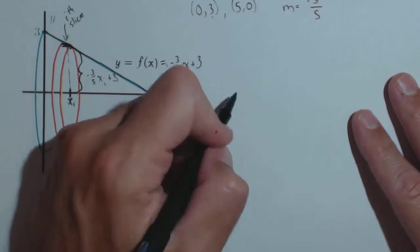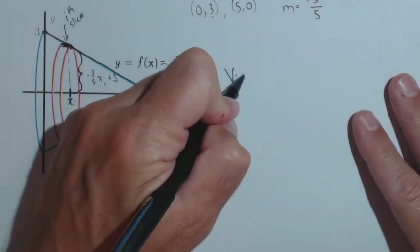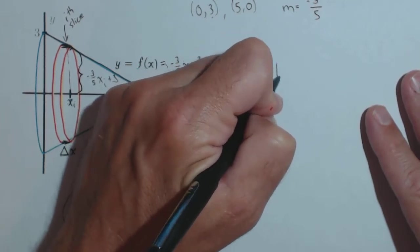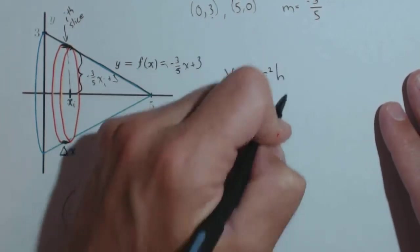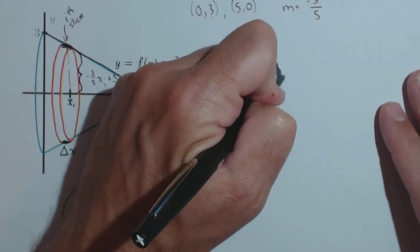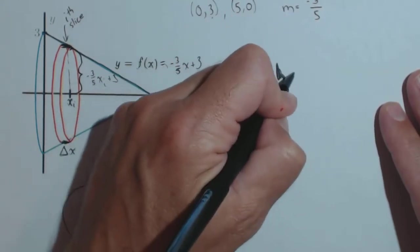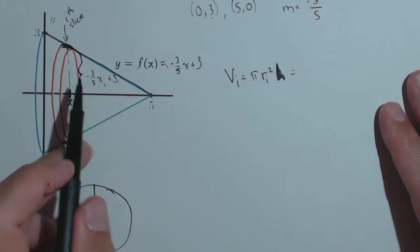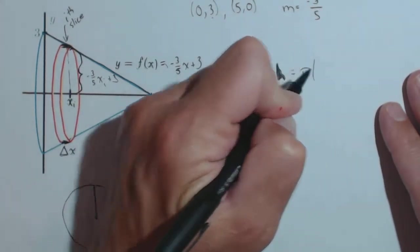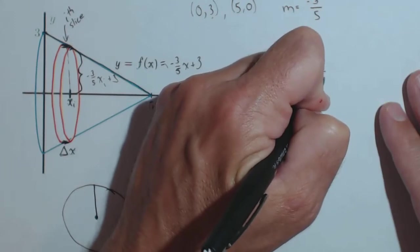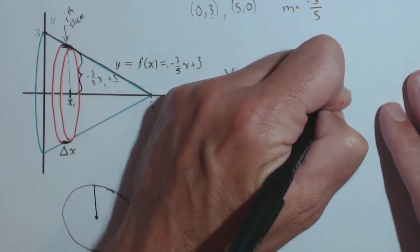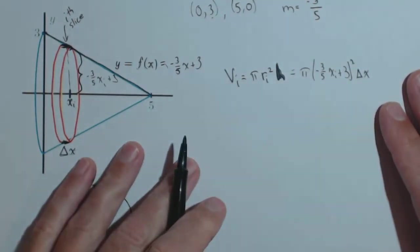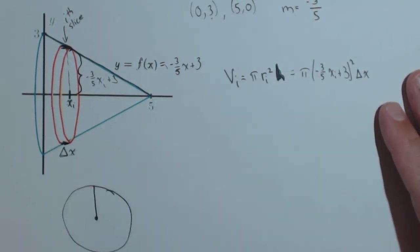The reason that's important is because when we go to find the volume of the i-th slice, well, like we said, it's a cylinder. So, π r² h, we'll call it sub i, and applying our values, r_i is this y_i. So, π times (-3/5 x_i + 3)², and then the height of this thing is Δx. So there's the volume of our i-th slice.